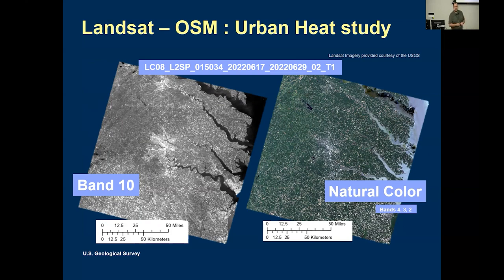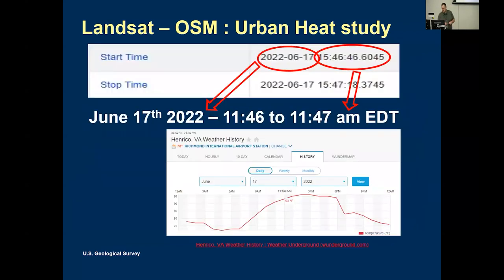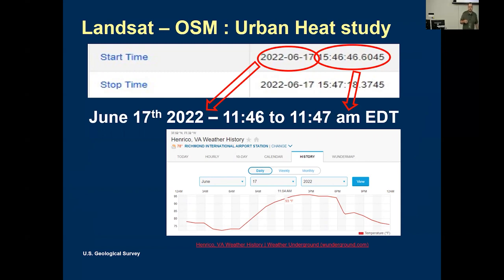On the left we have Band 10, one of our thermal bands, and on the right we've got a natural color image. This is over Richmond — that's where I focused because of the conference. The natural color is our bands 4-3-2, so green is green, red is red. This image was gathered last year, about this time, June 17th at 1546 GMT, which translates to just before noon local time. On that day, I checked Weather Underground and pulled air temperature data from the Richmond airport — it was 93 degrees out. Keep that in mind.